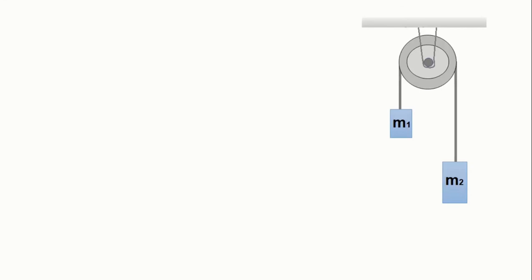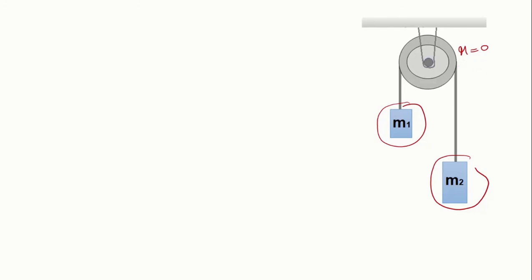We circle the objects we are going to study — we have m1 and m2. We are not going to take care of the pulley because the mass of the pulley equals zero and there is no friction. So the pulley is not treated as a third mass. That means in this case we have just two objects, connected to each other.